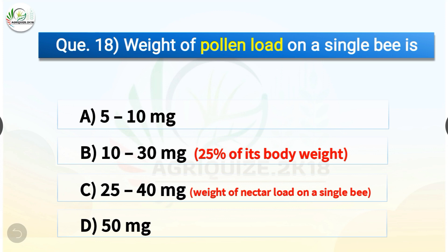Question number eighteen: The weight of pollen load on a single bee is which of the following? The options are: 5 to 10 mg, 10 to 30 mg, 25 to 40 mg, or 50 mg. The correct answer is option B — 10 to 30 mg. The weight of pollen load on a single bee is 10 to 30 mg, which is 25% of its body weight. The weight of nectar load on a single bee is 25 to 40 mg.